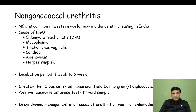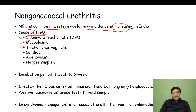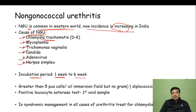Non-gonococcal urethritis is common in the western world, though the incidence is increasing in India. The causes include Chlamydia D2K (most common), Mycoplasma, Trichomonas vaginalis, Candida species, Adenovirus, and Herpes simplex virus. The incubation period is pretty long compared to gonococcal urethritis — it varies from one week to six weeks in non-gonococcal urethritis, while for gonorrhea it is only one day to five days.